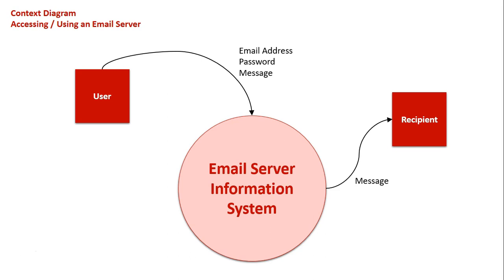We also need to think about what the user gets out of this information system, because they're obviously entering data in but they also get information back out. They'd be getting two things: confirmation of their email when they've sent it to a recipient, and the ability to check their own emails — going through them, forwarding them, deleting them, and so on. That's what they're getting out of the information system.